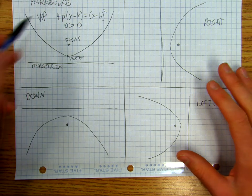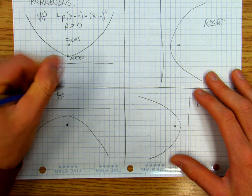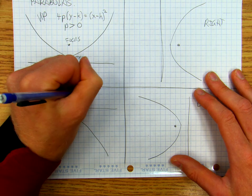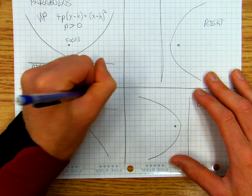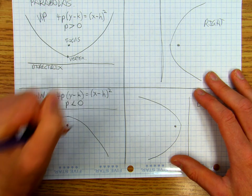Well, if you open down, you're going to have the same thing, 4P(y minus k) equals (x minus h) squared, and p is less than zero.